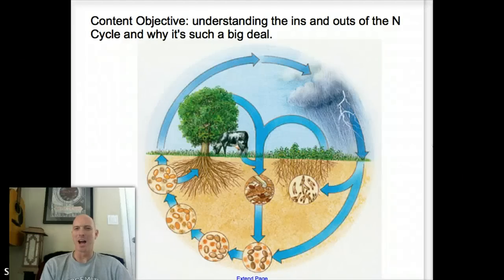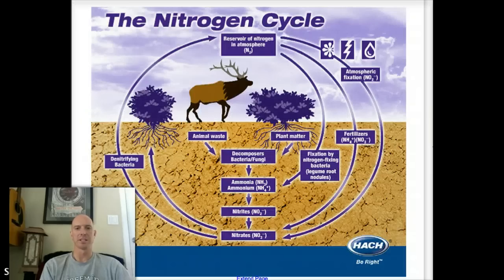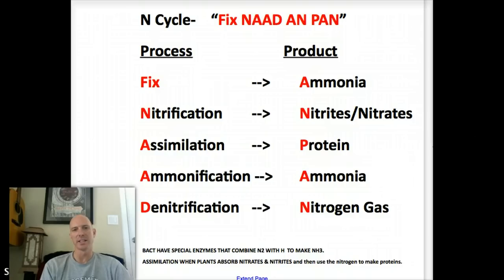And here we are again. Our content objective hasn't changed — we're still all about the N's and O's of the nitrogen cycle. Our letter of the day is still the letter N. And in part one of this little series, we did a spin through the nitrogen cycle, which is fairly complicated. So what I want to do now is give you a tool for how you're going to actually keep all that straight.